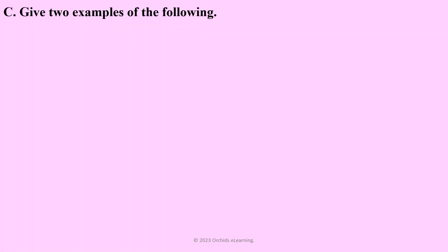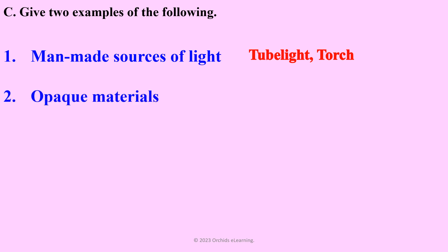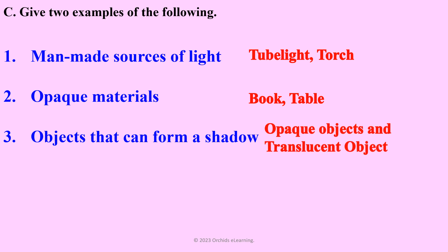Give two examples of the following. Man-made sources of light: tube light, torch. Opaque materials: book, table. Objects that can form a shadow: opaque objects and translucent objects.